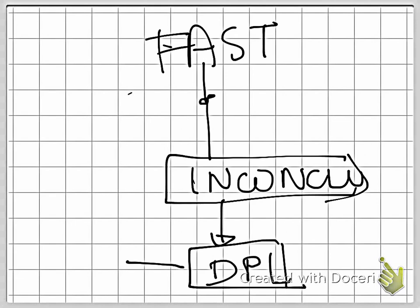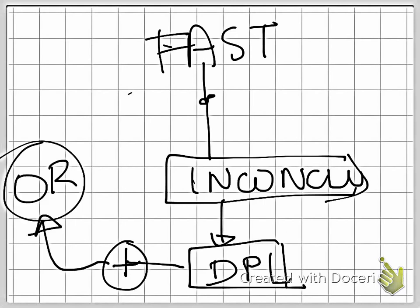Now if this DPL was positive, you do the same thing. You take them to the OR for laparotomy. But if this is negative, and this is negative, both our FAST and DPL are negative, it means that the bleeding is not in the abdomen.